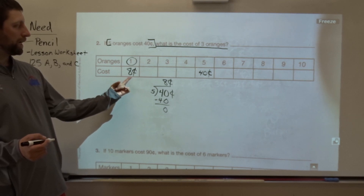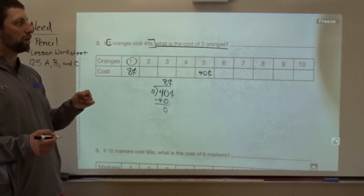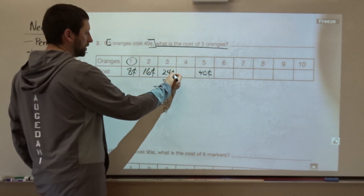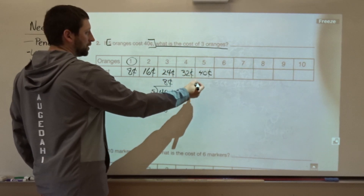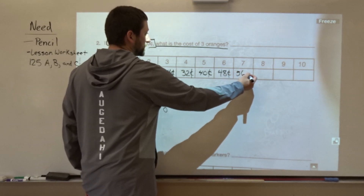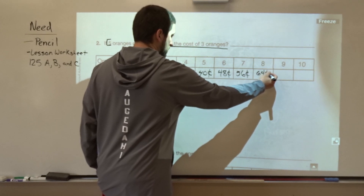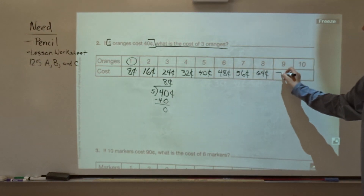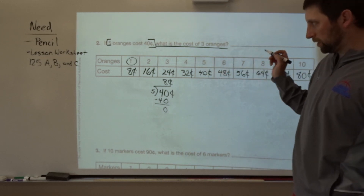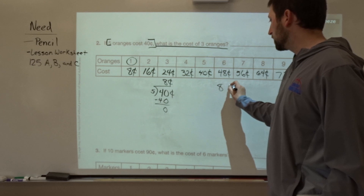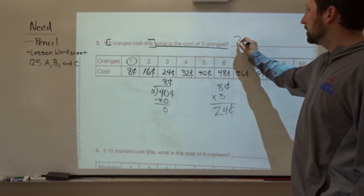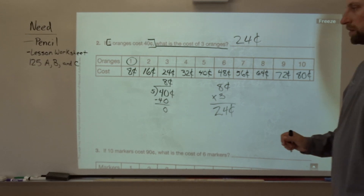Now we count by eights in the table: eight, sixteen, twenty-four, thirty-two, forty, forty-eight, fifty-six, sixty-four, seventy-two, eighty. Because the question asks for three oranges, we take eight cents times three, which equals twenty-four cents for three oranges.